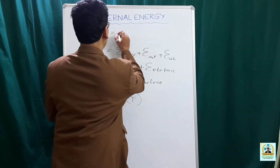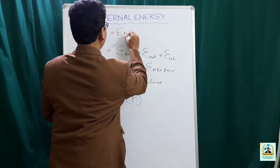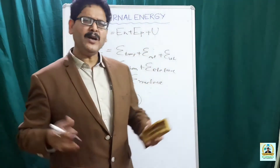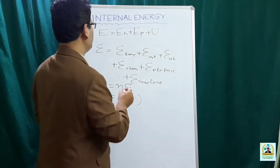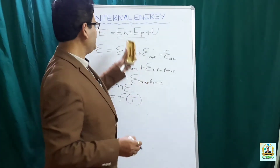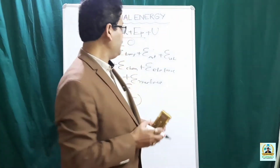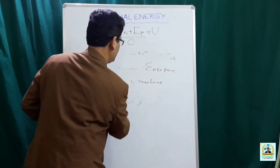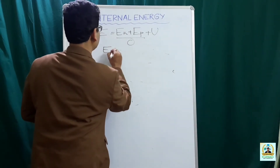The total energy E can be represented as the sum of kinetic energy E_K, potential energy E_P, and internal energy U. If both kinetic and potential energy are zero, then the internal energy equals the total stored energy, and E becomes U.